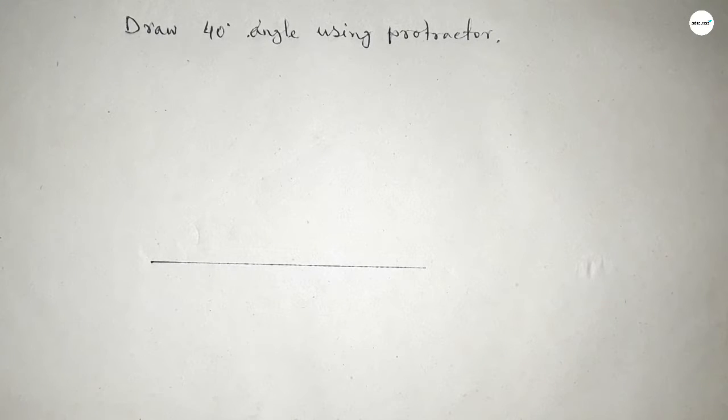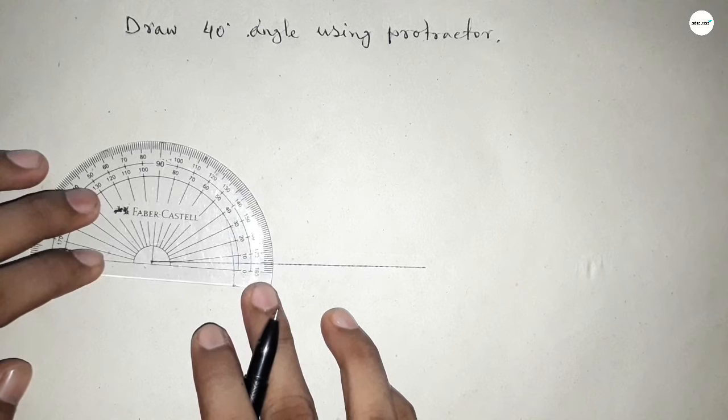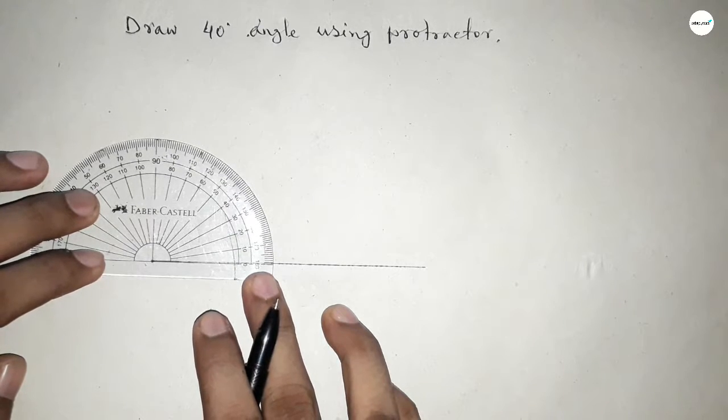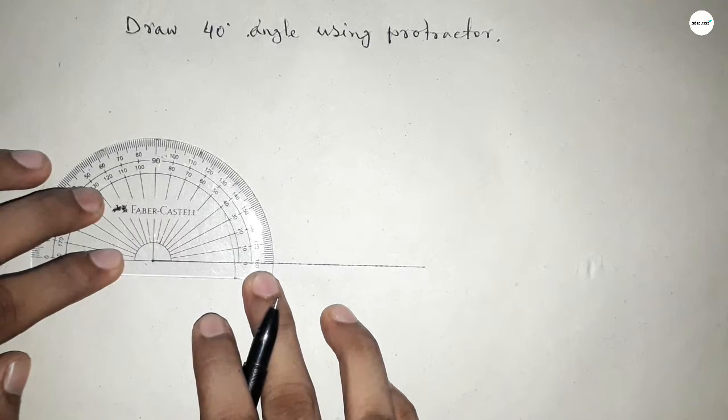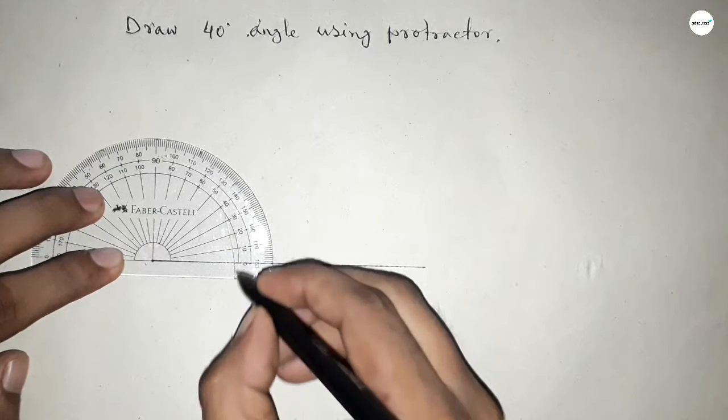Next, marking a point here. Now using the protractor, putting the protractor perfectly on the line.